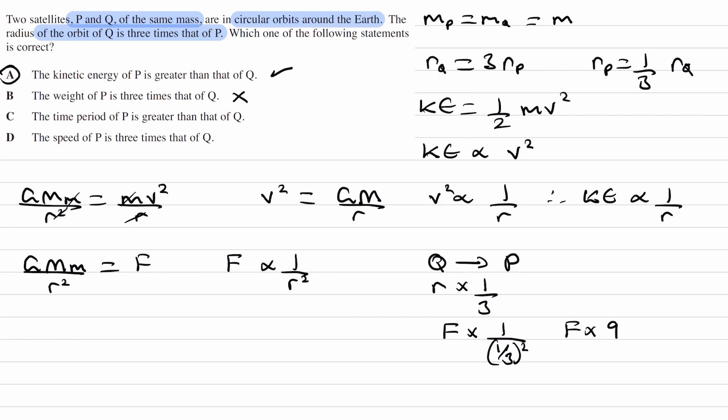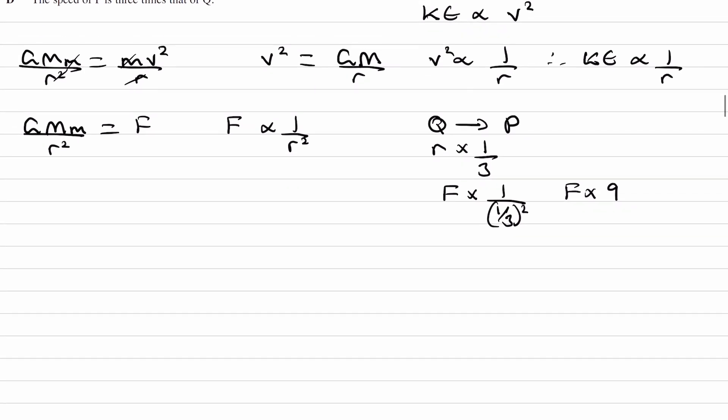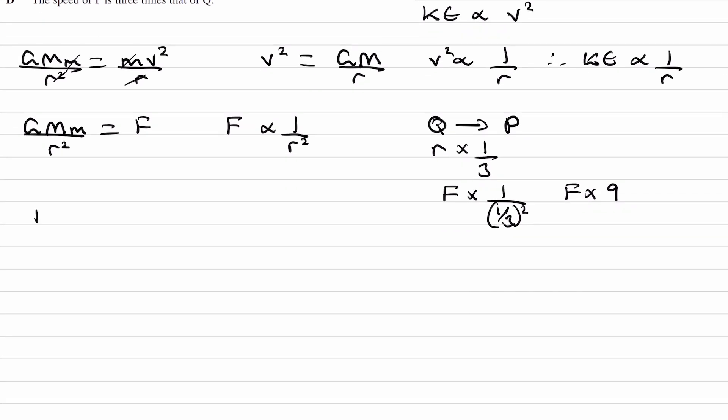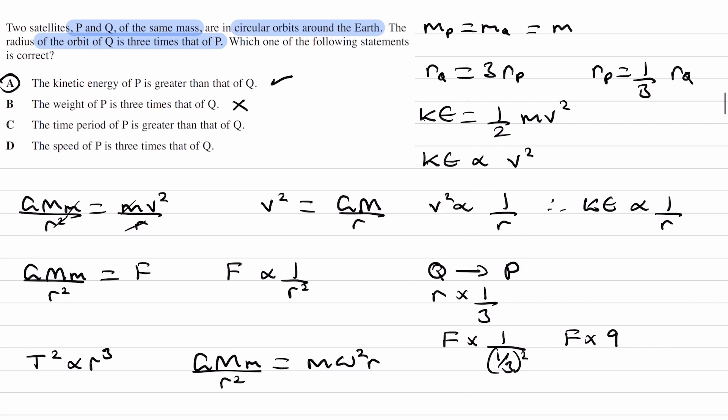For C, the time period. Okay, so for time period, the equation that we can use, we can use Kepler's third law, T squared is proportional to R cubed. And you can derive that by equating the gravitational force to m omega squared R. But we don't need to derive it. If you know that T squared is proportional to R cubed from Kepler's third law, that's all we need.